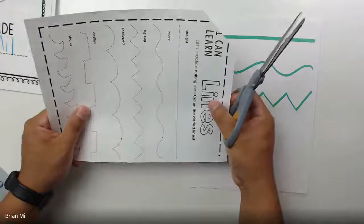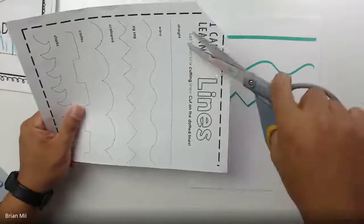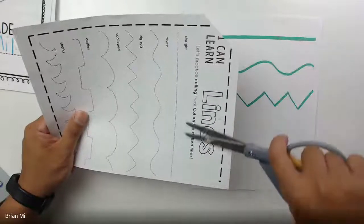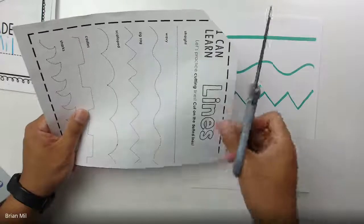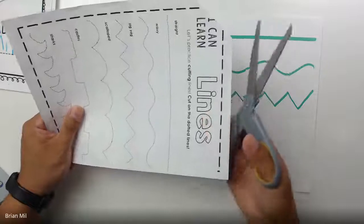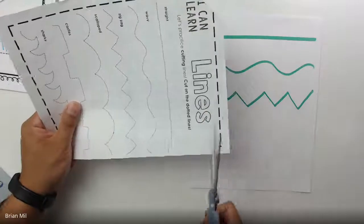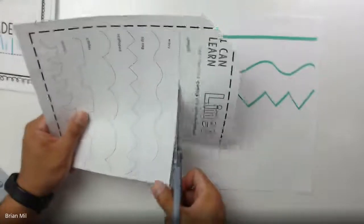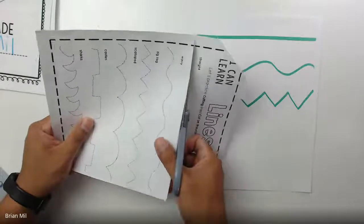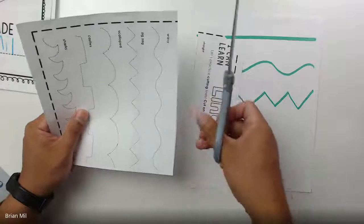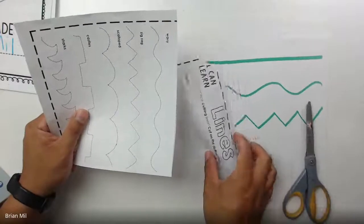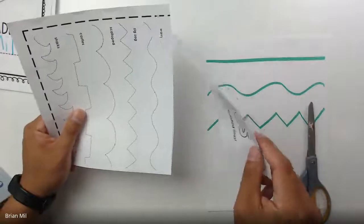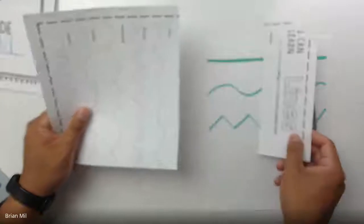You never want to have your blades pointing towards you. That'd be very unsafe, and you don't want to point it towards anyone in particular either. The first step is to focus on the first line. The first line is a straight line.